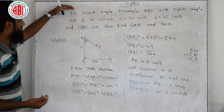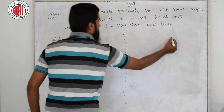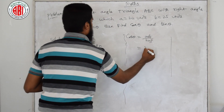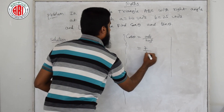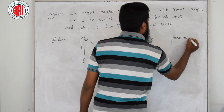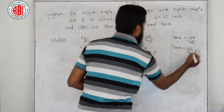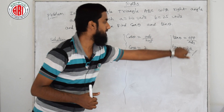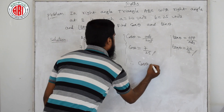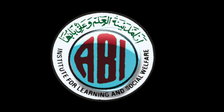Now finding cos theta and tan theta. Cos theta equals adjacent by hypotenuse. Adjacent is 7 and hypotenuse is 25, so cos theta equals 7 by 25. Tan theta equals opposite by adjacent. Opposite is 24 and adjacent is 7, so tan theta equals 24 by 7. Therefore, cos theta equals 7 by 25 and tan theta equals 24 by 7. Problem done.